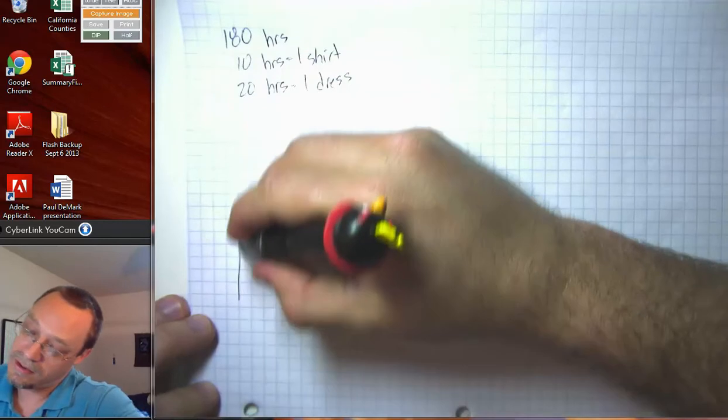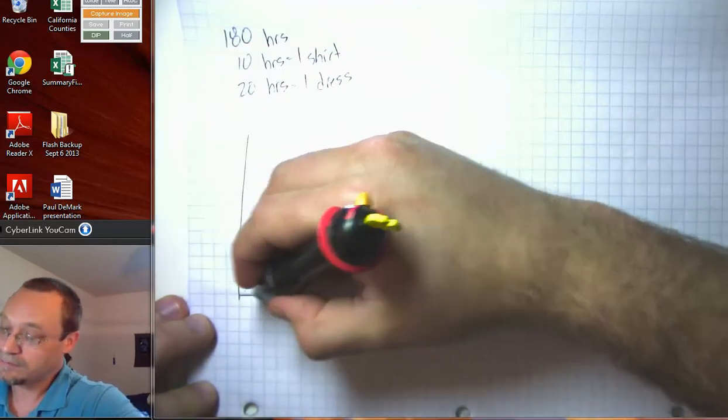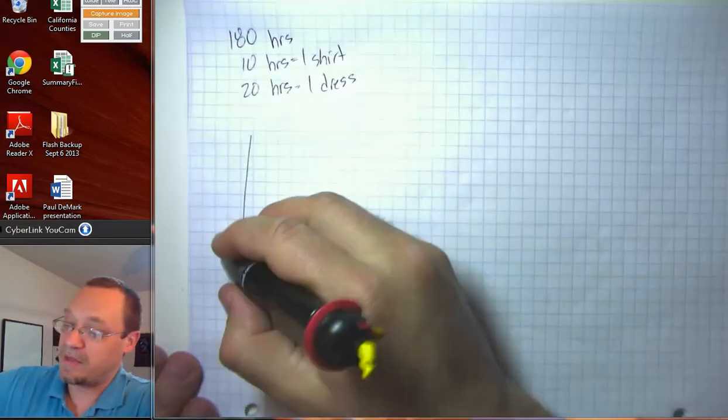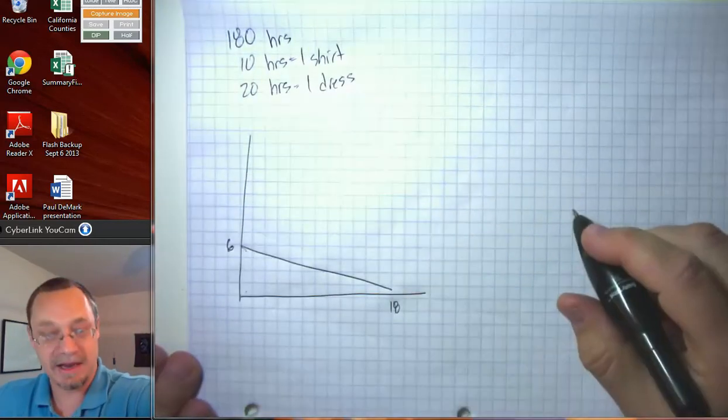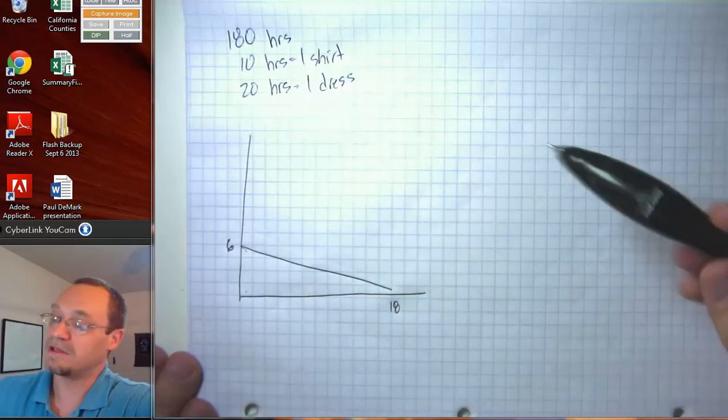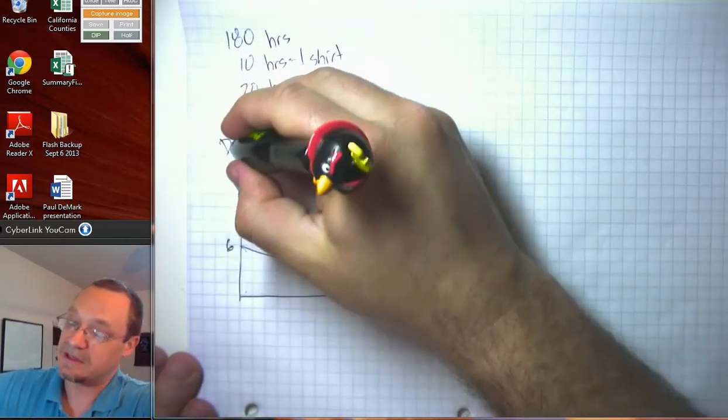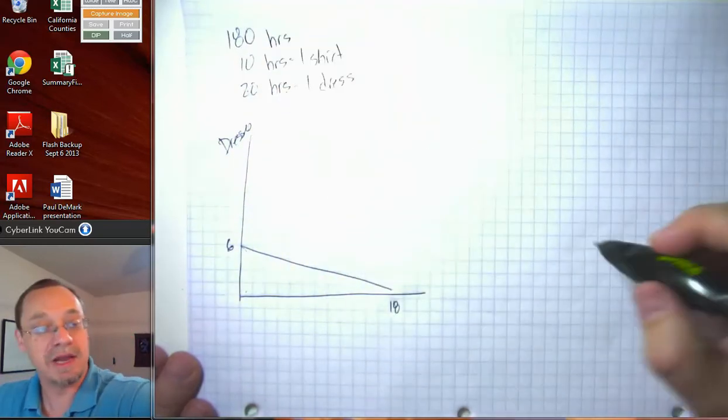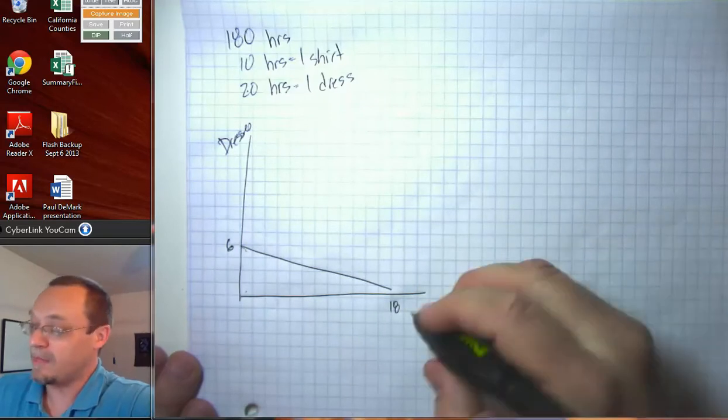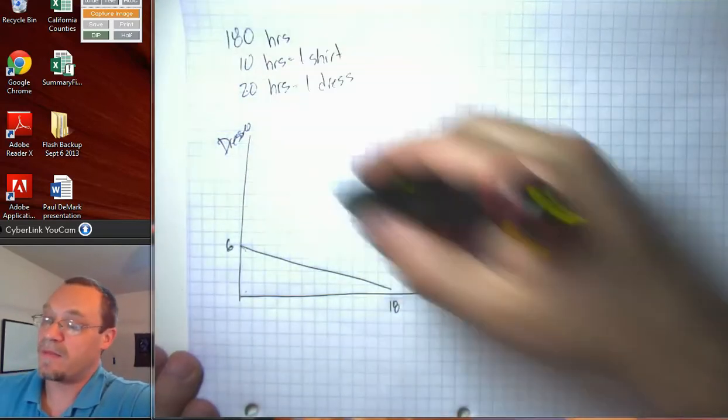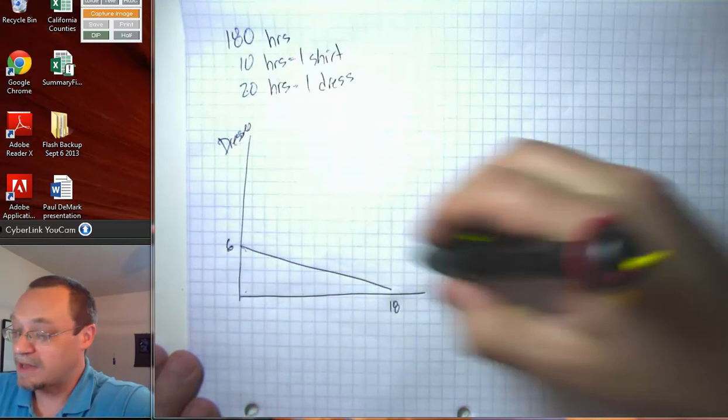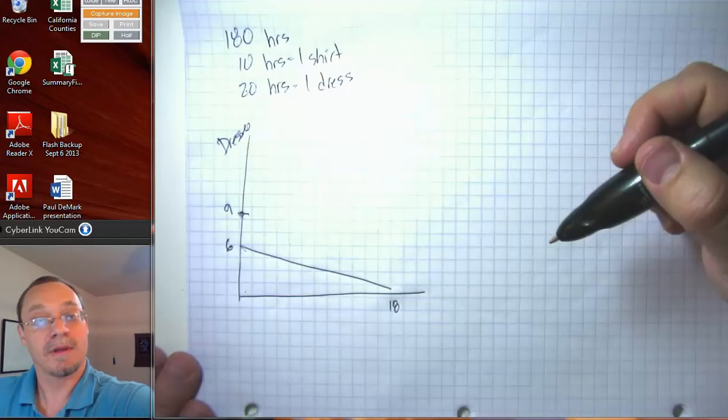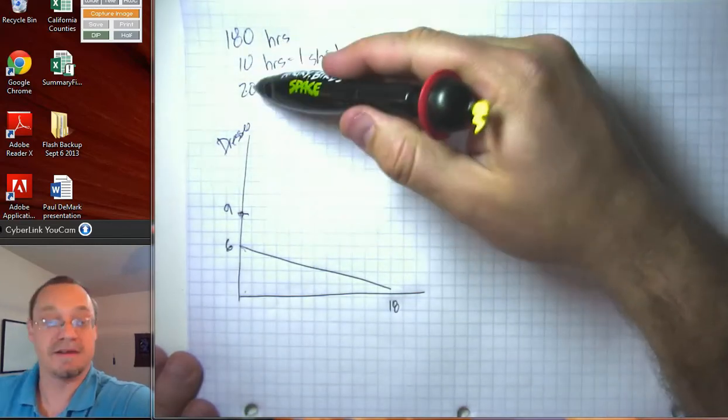Well, remember, we used to have a PPF, and I'm drawing roughly now. We used to have a PPF that had endpoints that were six and 18, because we could produce six dresses, because we used to need 30 hours per dress, 180 divided by 30 gets us to six. Now, what's the maximum number of dresses that we can make? The maximum number of dresses we can make has grown to nine, because we have 180 divided by 20.